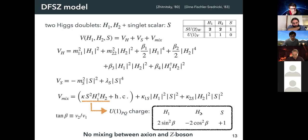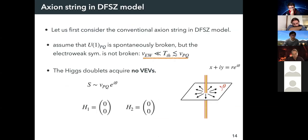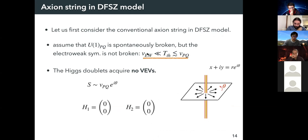Thanks to this assignment of PQ charge, there is no mixing term between the axion and Z-boson. Let's first consider the conventional axion string in the DFSZ model, assuming the PQ symmetry is spontaneously broken but electric symmetry is not — i.e., temperature is much larger than the electroweak scale but less than the PQ breaking scale. In this situation, the Higgs doublets acquire no VEVs, and the axion string consists of only the complex scalar S — this is the conventional axion string.